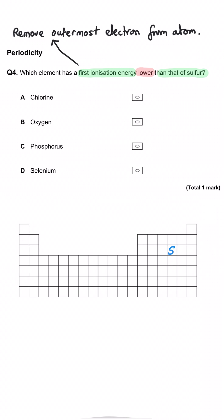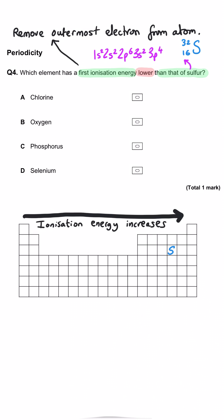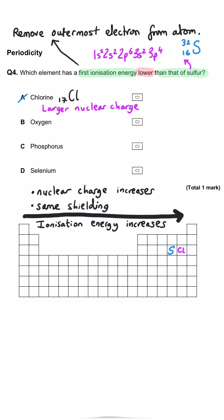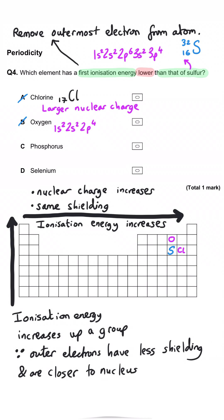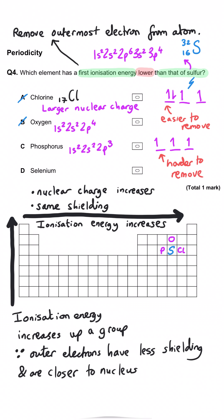Which element has a first ionization energy lower than that of sulfur? As we work across the period, ionization energy generally goes up. Chlorine is one space to the right of sulfur so it has a higher first ionization energy. Oxygen is above sulfur in its group, so its first ionization energy is much higher. Phosphorus is the previous element in the same period as sulfur, and there's a dip between the paired orbitals in sulfur and the single occupancy in phosphorus — so sulfur is actually higher than phosphorus. The correct answer must be selenium, which is one position down in the group from sulfur, giving it an extra occupied shell and making it easier to remove the outer electron.